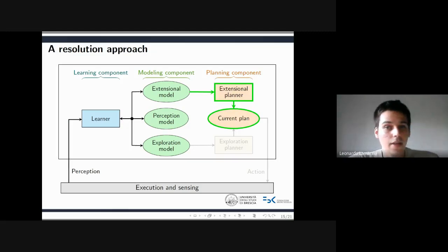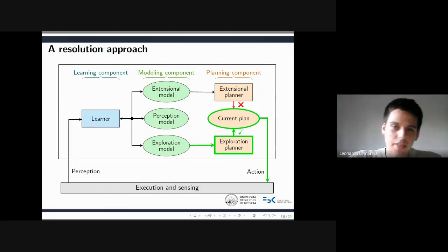Next, a plan is searched by the extensional planner. However, the search of such a plan may fail because the transition function learned by the agent may not be complete enough. In this case, a goal-driven exploration strategy is applied by means of an exploration planner, and finally the first action of the plan is executed.